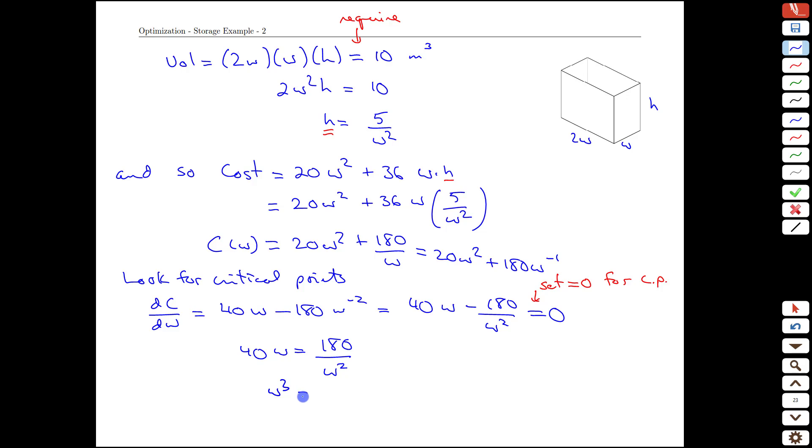We bring the w up. We get w cubed is 180 over 40. That can be simplified down to 9 halves. And so w is equal to the cube root, we have w cubed here, of 9 halves. And for reference, that's about 1.65. w is a length in meters.